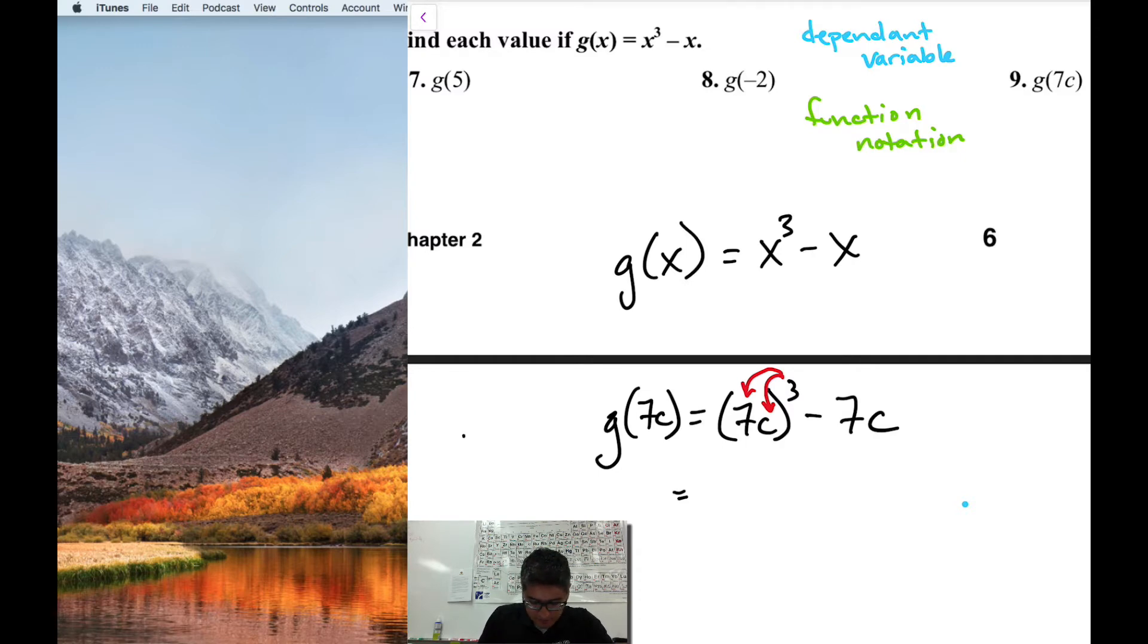What is 7 cubed? I know 7 times 7 is 49, but then times 7, I'm not entirely familiar with that one. 343. And then c cubed minus 7c. And that's it. That's as far as I can go.